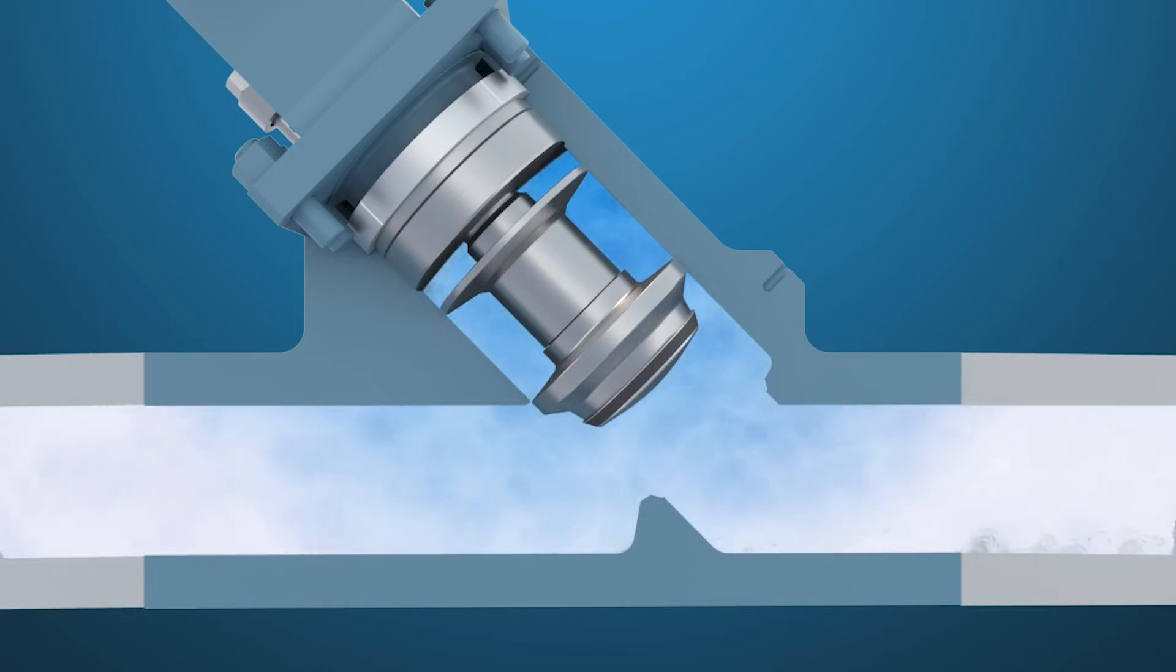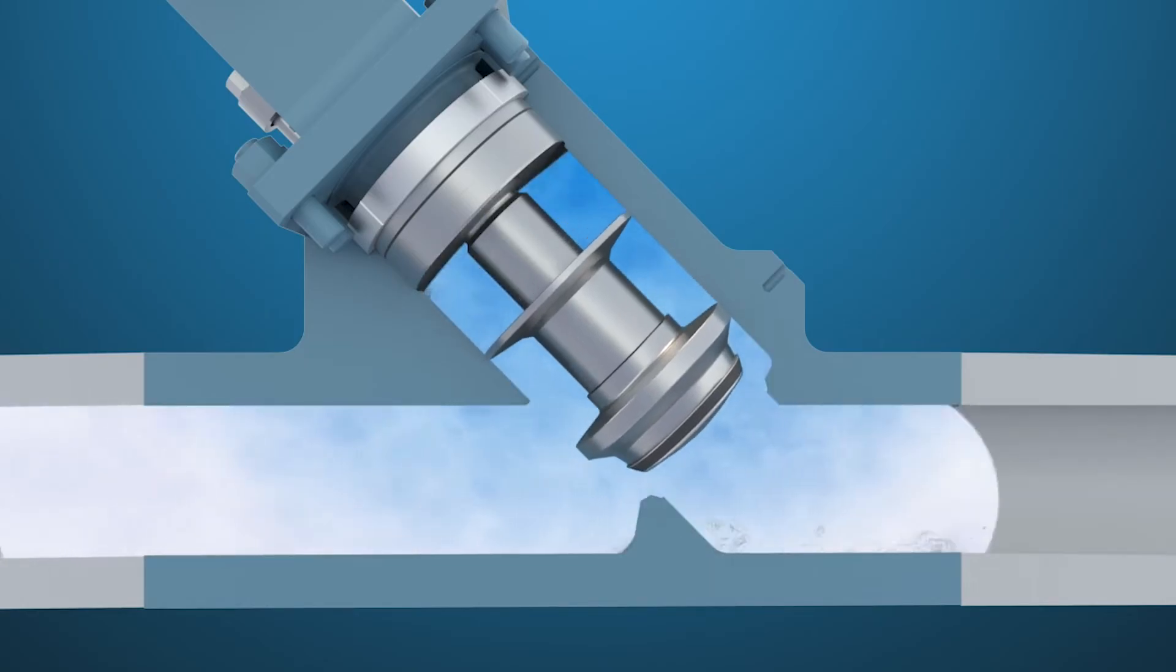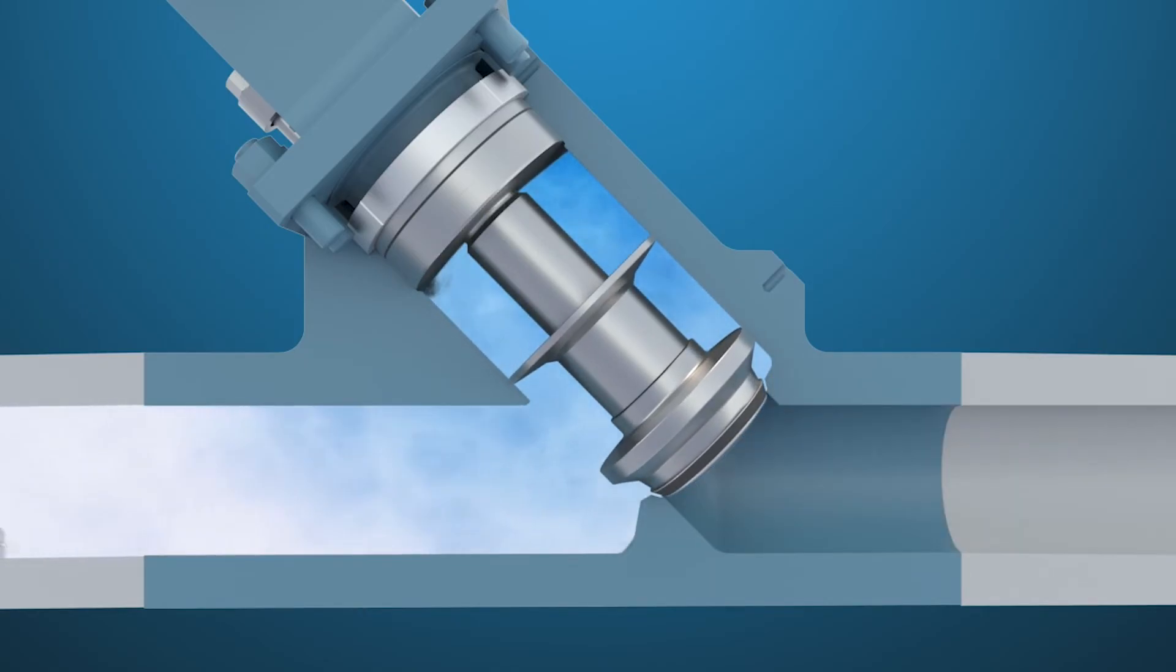In forward flow, the plug will remain open. In reverse flow, the plug will slam closed, preventing backflow.